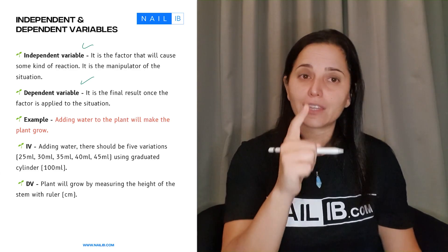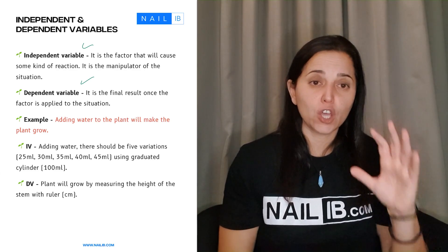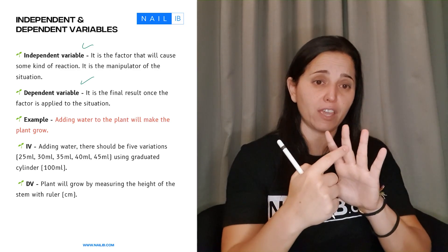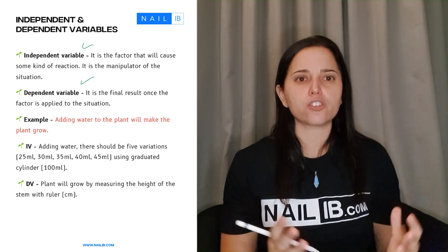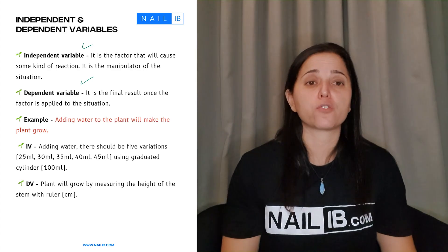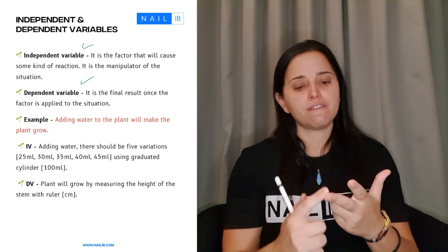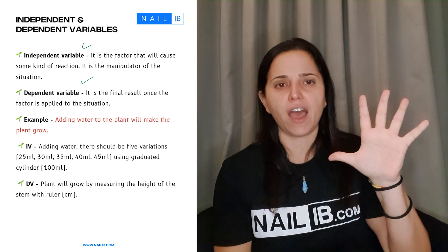Now here is another important thing when you're talking about independent variables. You need to have five variations of independent variables. So for instance if you're using a temperature you got to choose five variations of the temperature. So it can be 5, 10, 15, 20, 25. That's five variations.